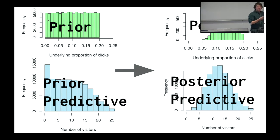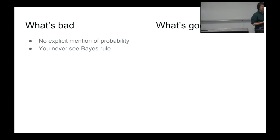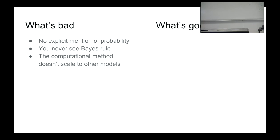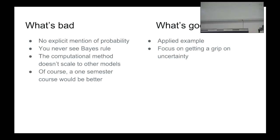Of course there are many things that are bad with this way of introducing Bayes. There's no explicit mention of probability — it's hidden behind random generating functions. You never see Bayes' rule. This is essentially an ABC method that doesn't really scale to other models. And it's something for a 30-minute session, not a full semester course. But it is an applied, realistic example, and it's really focused on getting a grip on uncertainty.